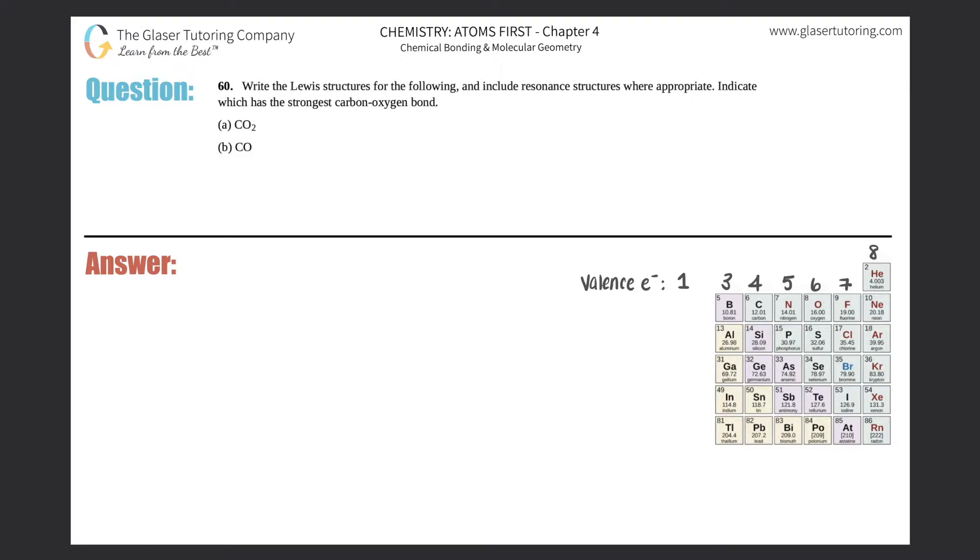Number 60. Write the Lewis structures for the following and include resonant structures where appropriate and indicate which has the strongest carbon-oxygen bond. And then we have A and B. So I'm just going to put A over here and B over here. All right.